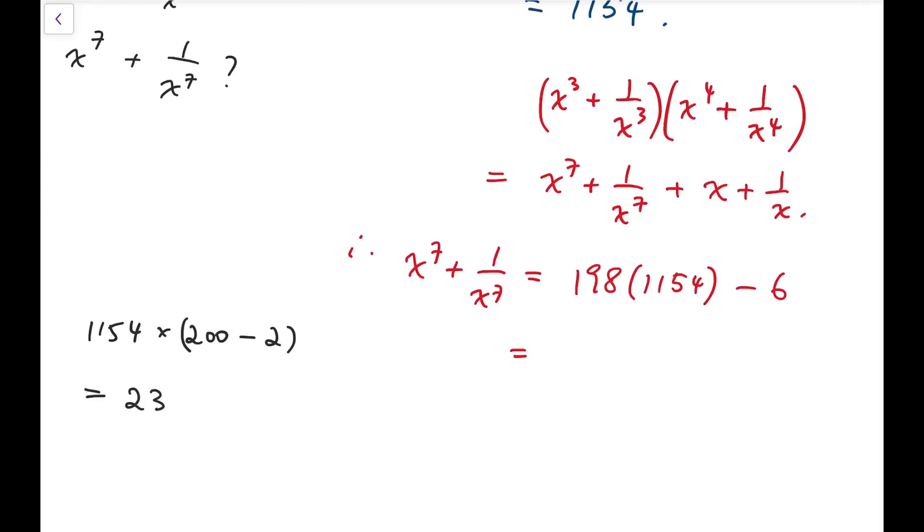then it's actually 198 times 1,154 minus 6. So of course if you want to compute that by hand, you will get 2,308 and then multiply this number by 100 minus 2,308 and so you will get 228,492. So then our final answer is actually 228,486.